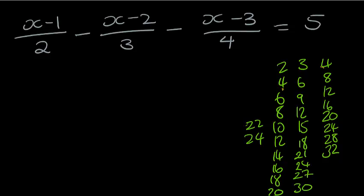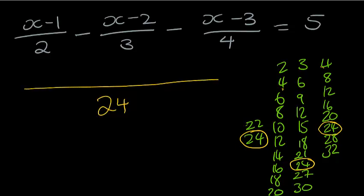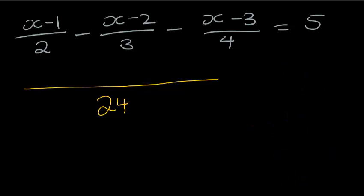What do I see? I see I've got a 24, I've got a 24, and I've got a 24 there. That means that my lowest common denominator is going to be 24. On the left-hand side of my equation, I'm going to put everything over 24. Notice that this 24 is the same as 2 times 3 times 4. That gives me 24.